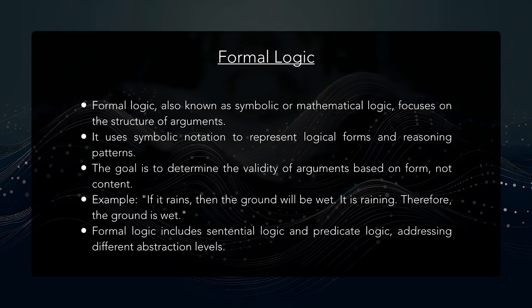Logic can be broadly categorized into two main types: formal and informal logic. Formal logic, also known as symbolic or mathematical logic, focuses on the structure of arguments. It uses symbolic notation to represent logical forms and abstract patterns of reasoning. The primary goal of formal logic is to determine the validity of arguments based on their form rather than on their content — that is, their structure rather than what they're specifically about.